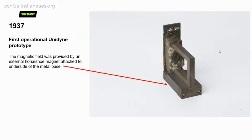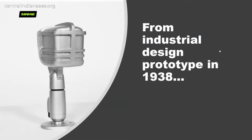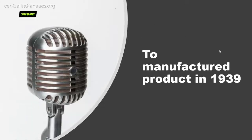An industrial design prototype was created in 1938 — a piece of carved wood painted silver. When Shure moved from Evanston to Niles, Illinois in 2004, they were cleaning out the old building. Someone crawled underneath the anechoic chamber and brought out dusty boxes, one labeled '1938 Ben's Microphone,' containing this prototype. So Shure went from prototype to manufactured product in essentially two years.